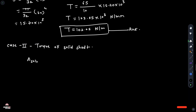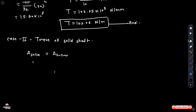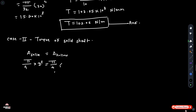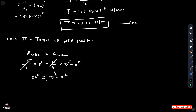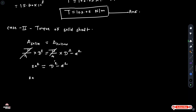For the same sectional area condition: area of solid shaft equals area of hollow shaft. Area of solid shaft is pi over 4 times d squared. Area of hollow shaft is pi over 4 times (D squared minus d squared). The pi over 4 terms cancel, leaving 20 squared equals D squared minus d squared.